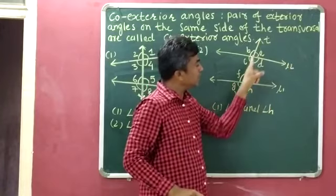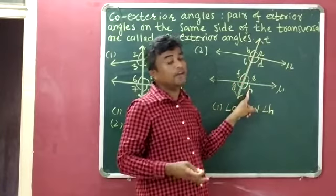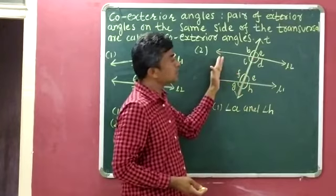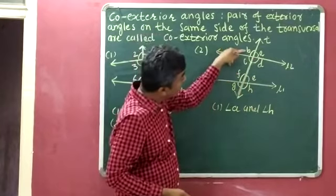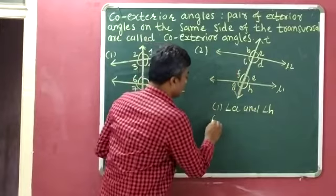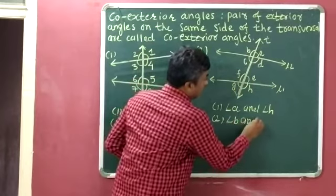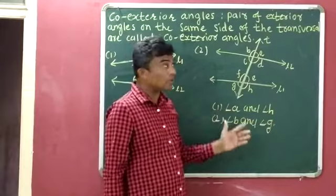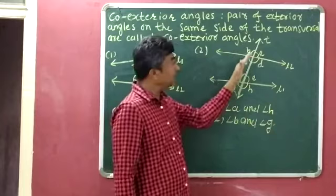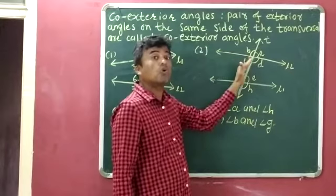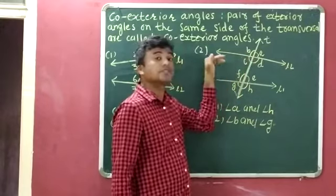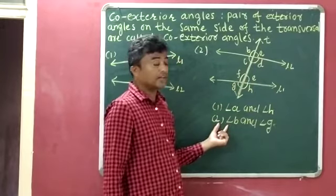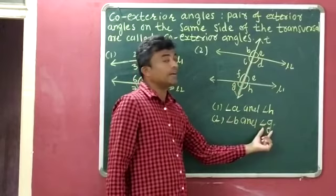Angle A and angle H are exterior and they lie on the same side of the transversal. On the second side of the transversal, the exterior angles are angle B and angle G. So the second pair is angle B and angle G. Both are co-exterior angles because they are exterior angles and they lie on the same side of the transversal.